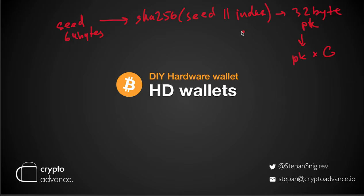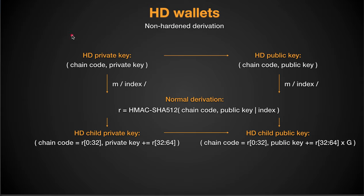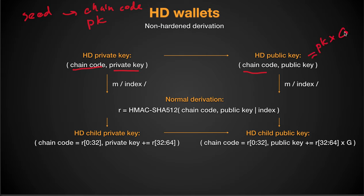This is already a working derivation scheme, but there's a much better standard that is more flexible. In the standard we have the seed split into two parts: the first 32 bytes are the chain code and the other 32 bytes are the private key. This makes our HD private key. The corresponding HD public key is the same chain code plus the public key, which is just the private key times the generator point. From this key we can derive children.